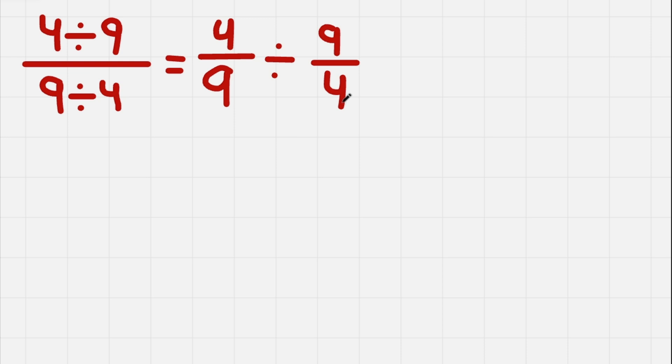So now we can use the rule where we flip the divider, in this case 9 divided by 4, while changing the sign from division to multiplication. So this will look like this.